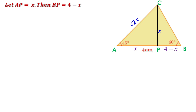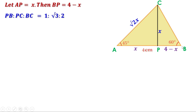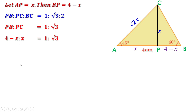Now look at triangle PBC. Angle B is 60 degrees and angle P is 90 degrees, therefore angle at C is 30 degrees. That means it is a 30-60-90 triangle with side ratio 1:√3:2. The shortest side PB is opposite the 30-degree angle, so PB:PC:BC = 1:√3:2. We need PB and PC, so PB:PC = 1:√3. Replacing the values, (4 − X):X = 1:√3.